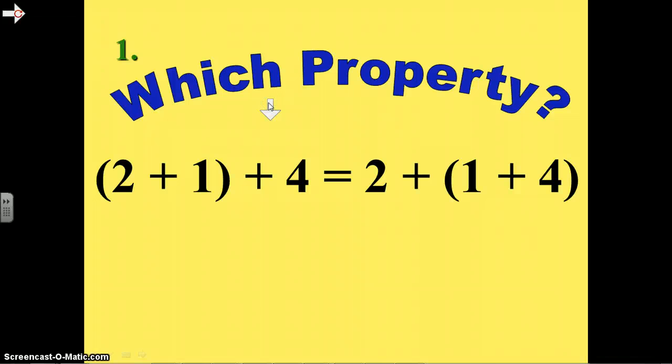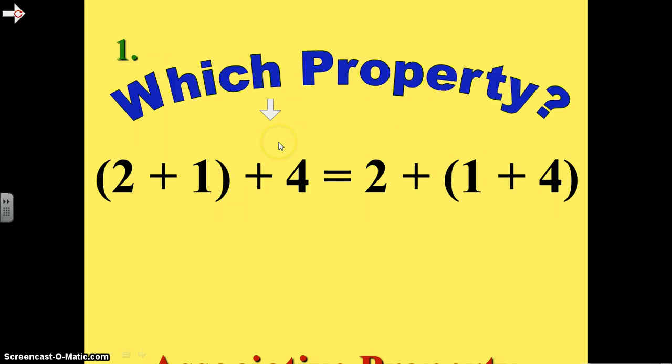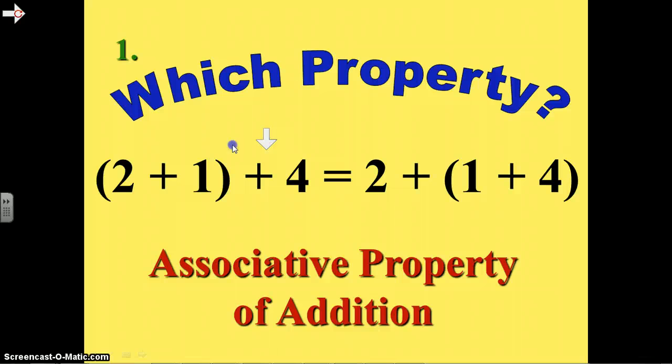What the associative property says is whenever you have just addition, and we'll see it in a second, just multiplication, you can move the grouping symbols, in this case parentheses. You can move the parentheses around. So if it's easier to add 1 plus 4 before 2 plus 1, we can do that. We can add 1 plus 4 first instead. We can just shift those parentheses over.